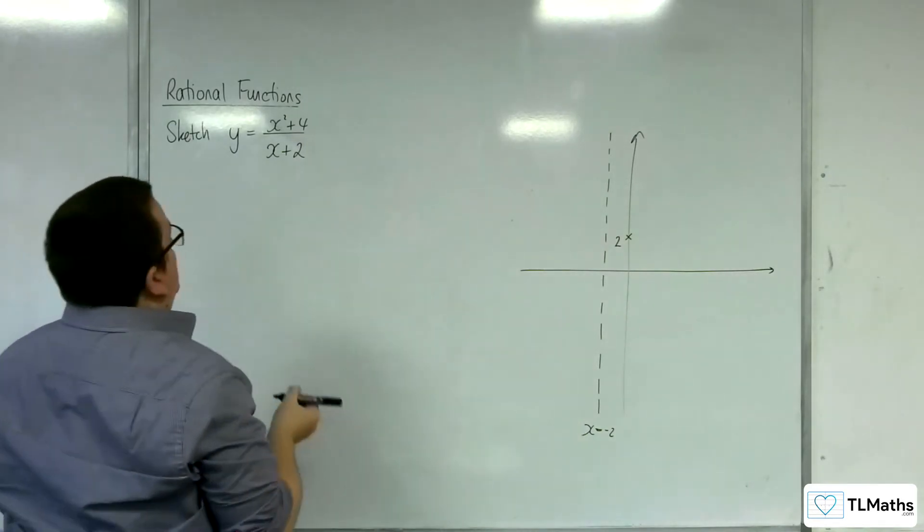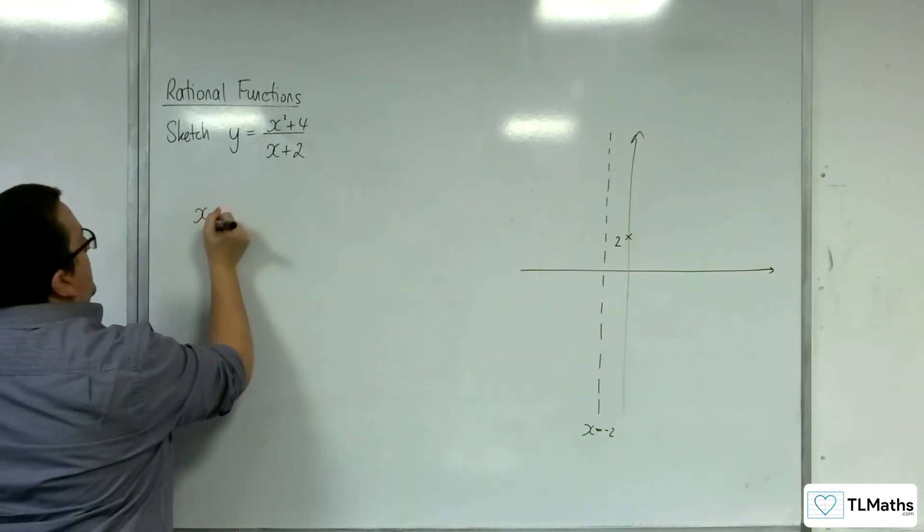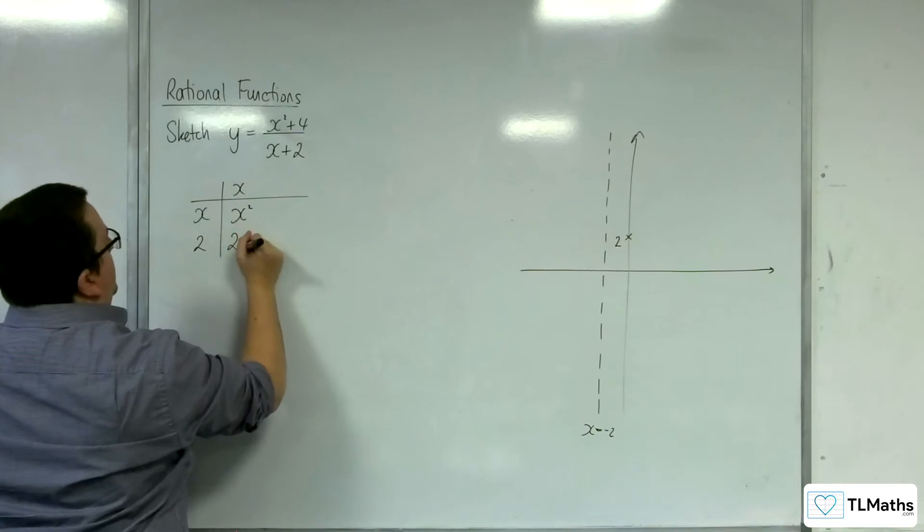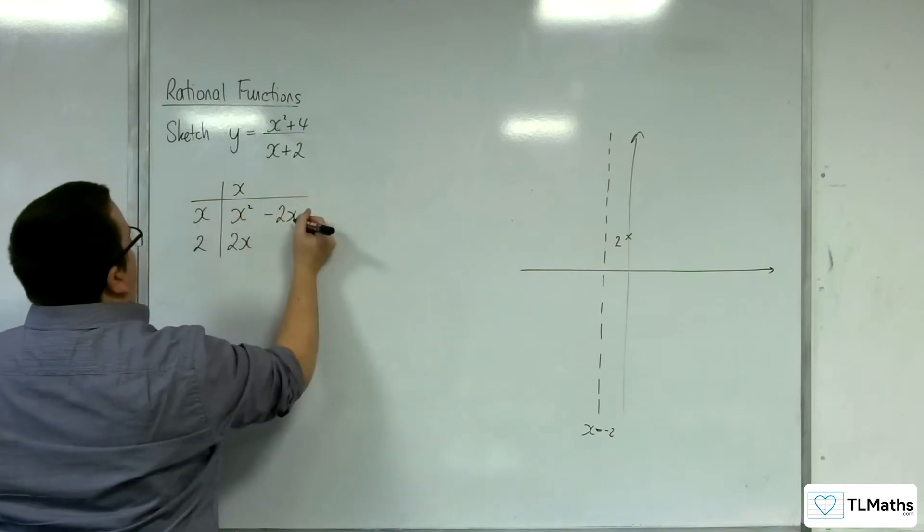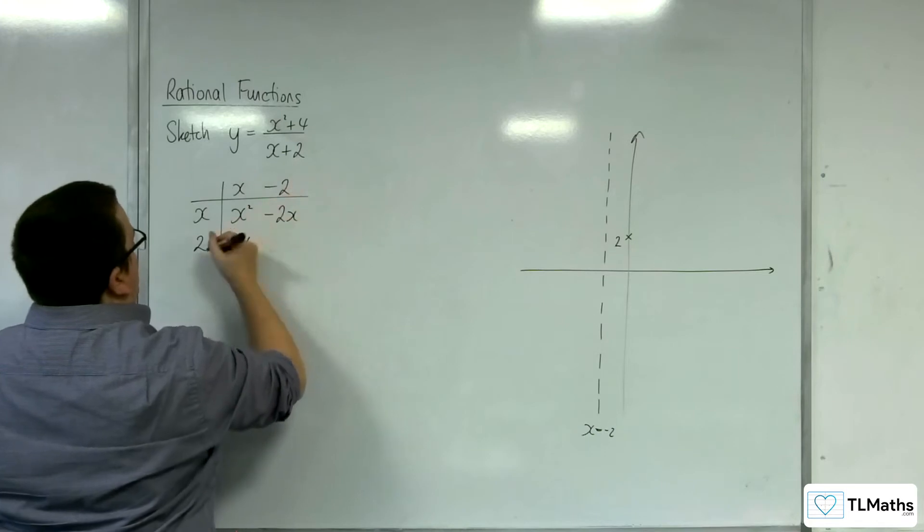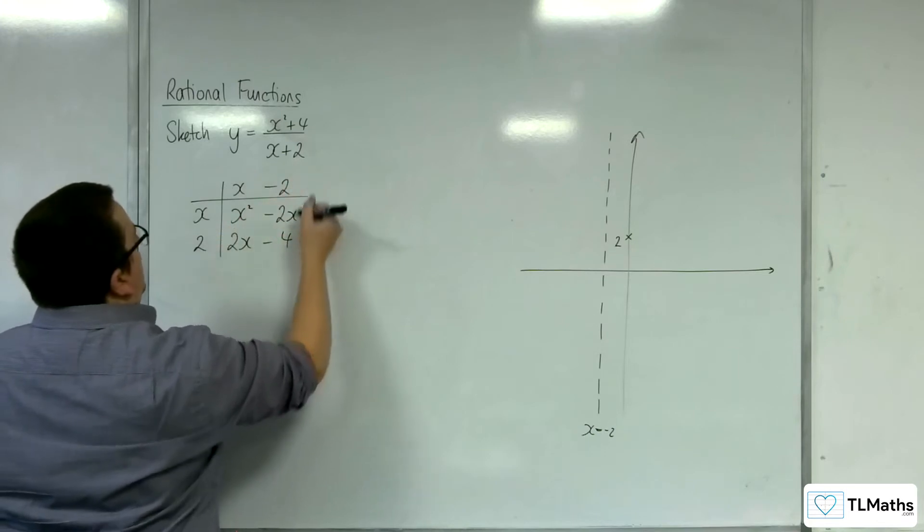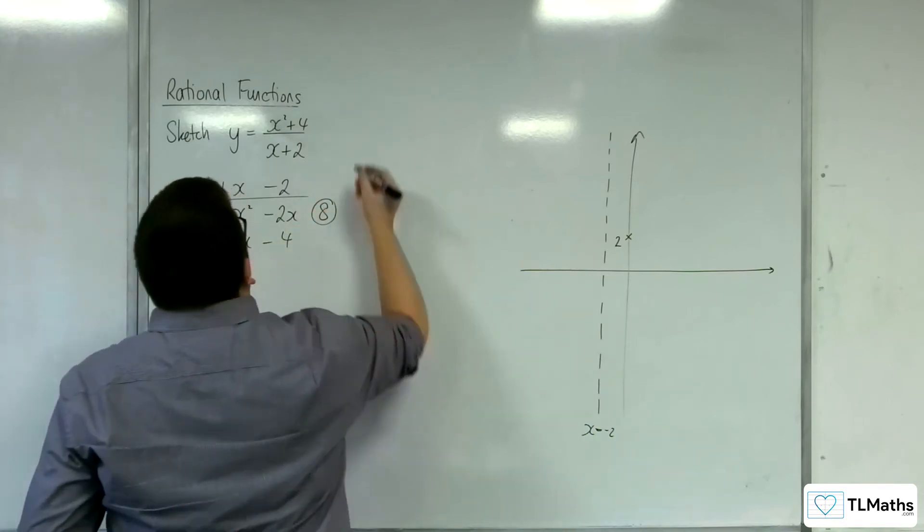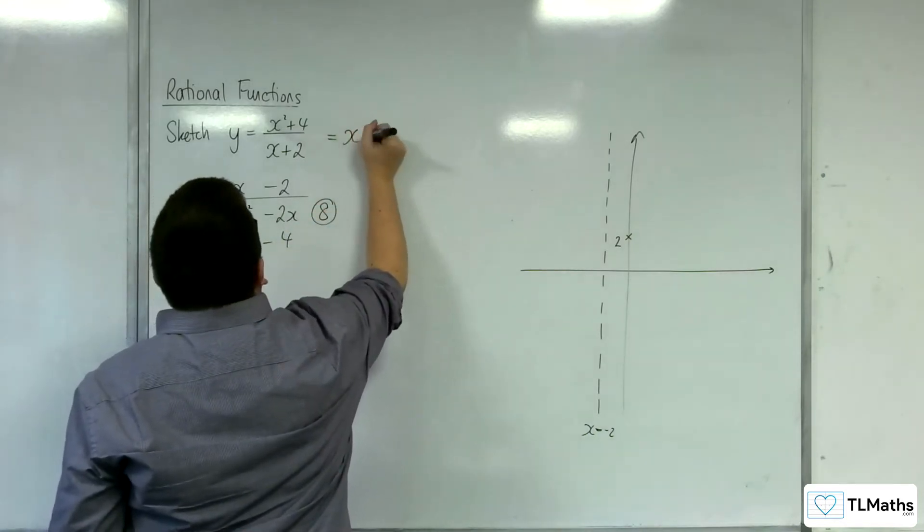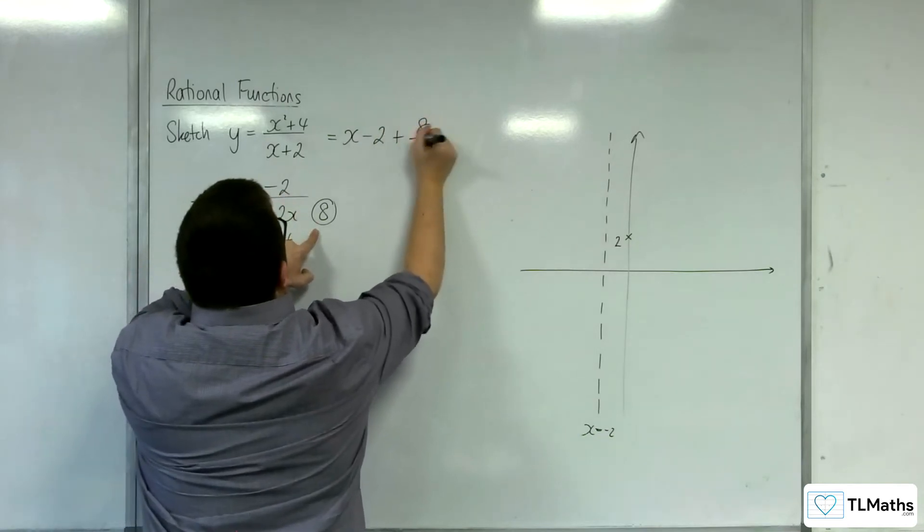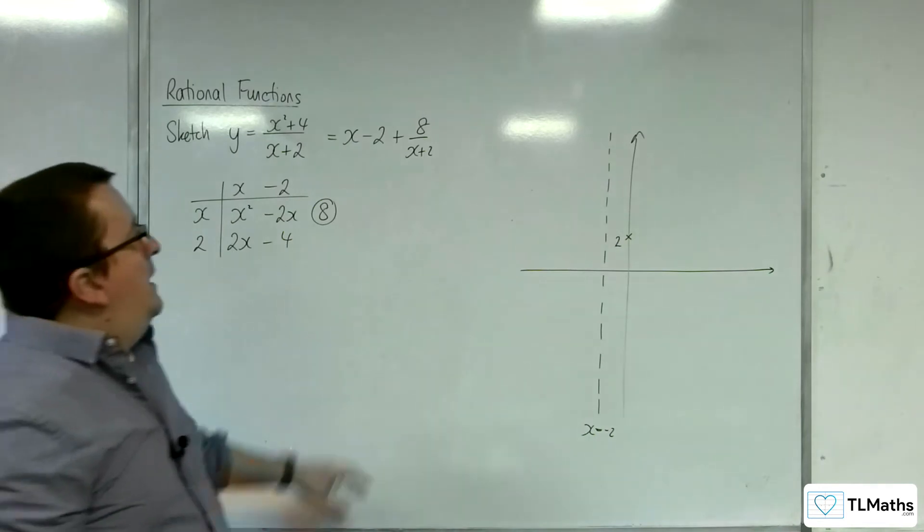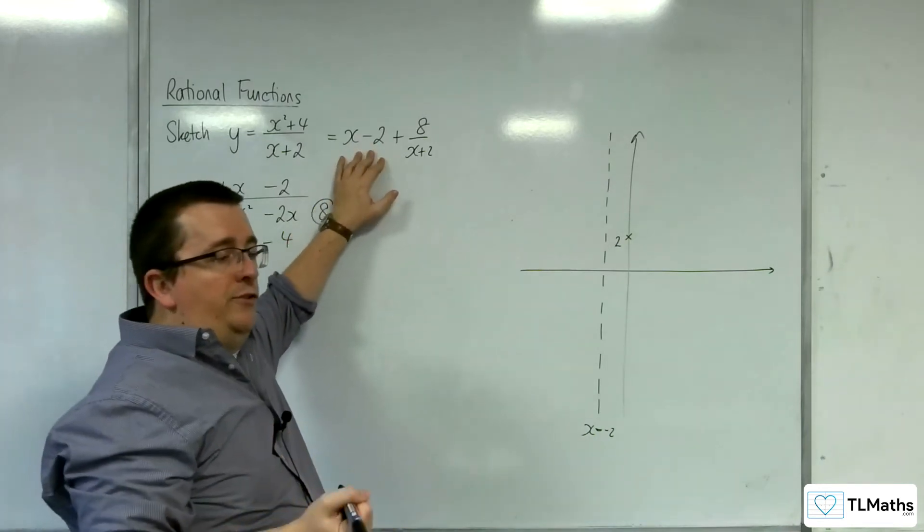Now for the oblique asymptote. Dividing x squared plus 4 by x plus 2, that's going to be x squared, so that's going to have to be x, 2x. We don't want any x's, so we've got to take away 2x. X into that goes minus 2. Minus 2 lots of 2 is minus 4. We want 4, so we're going to have to add on 8. So 8 is the remainder, and so this is equal to x take away 2 plus 8 over x plus 2. So that means that the oblique asymptote is y equals x take away 2.